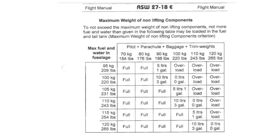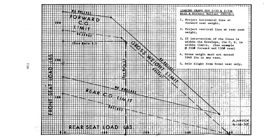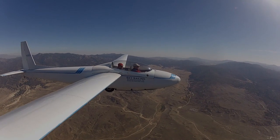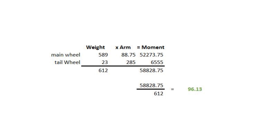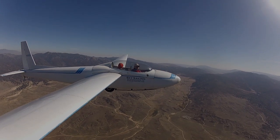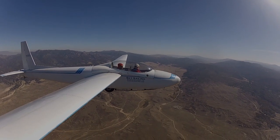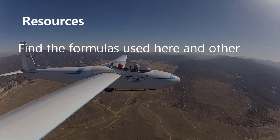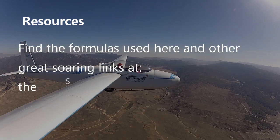Many manufacturers provide charts to help the operator determine the allowable weights and ballast to be carried. They are intended as a convenience, even though they may seem more complicated at first. You should use caution to make sure that they are not based on an empty weight that is not accurate for the individual glider being flown. If in doubt, the basic weight times arm equals moment calculation always works too. Remaining within the weight and balance limitations is critical for the safety and handling of any aircraft, and it's every pilot's responsibility to understand those limits and apply them to each aircraft they fly.